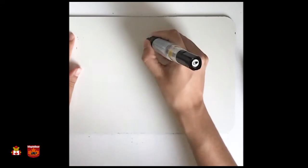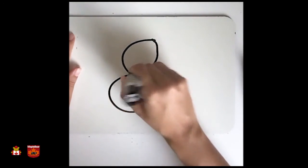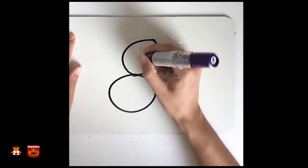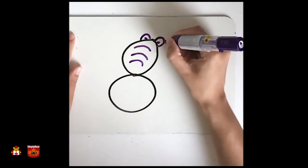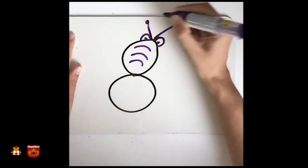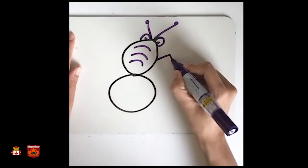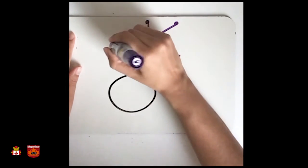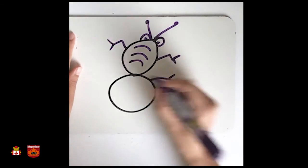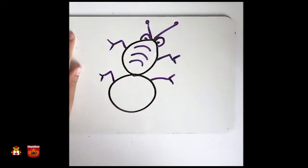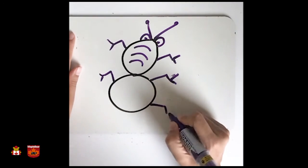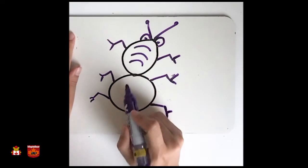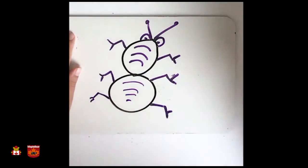Now, number eight. So first thing that you do is to trace number eight. Yes? After tracing... This one, let's do again this one. Okay. So we can do like this. Yes? And then the last one. And here, the rest of the body. Now, we have an ant.